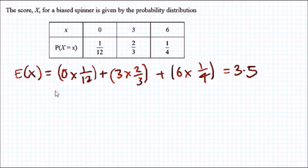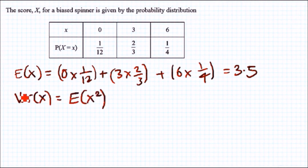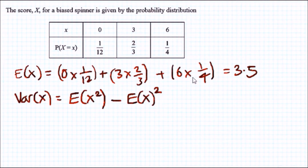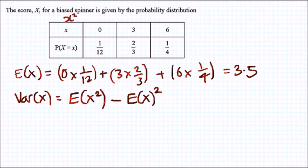Now we need to calculate the variance of X. The variance of X is defined as the second moment — the second expected moment minus the mean squared. The second moment means for every random variable X we need the X-squared equivalent. So we make an additional row called X-squared and square every value: zero squared is zero, three squared is nine, and six squared is 36.